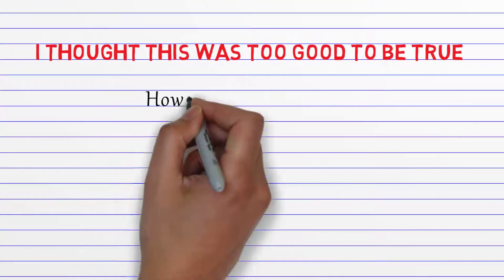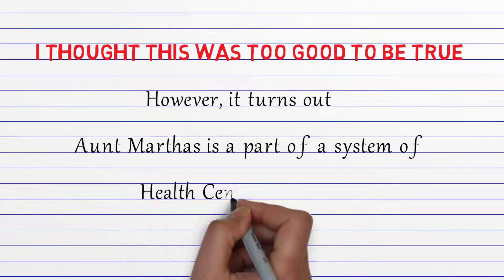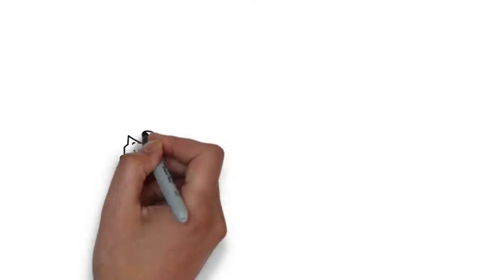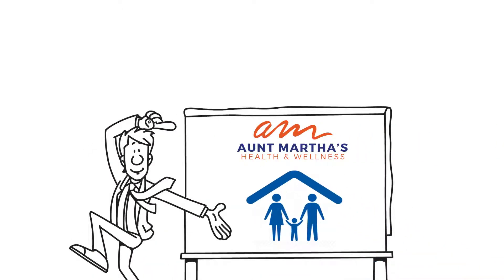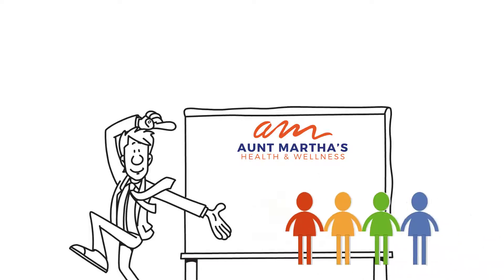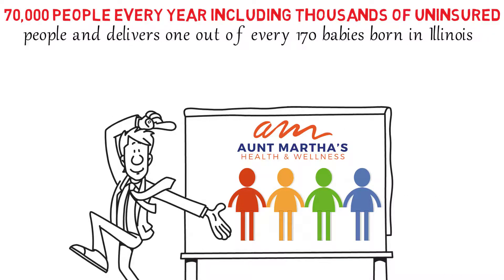I thought this was too good to be true. However, it turns out Aunt Martha's is part of a system of health care centers in Illinois. Aunt Martha's provides health care services, child welfare services, substance abuse treatment, and community support for over 70,000 people every year, including thousands of uninsured people, and delivers one out of every 170 babies born in Illinois.